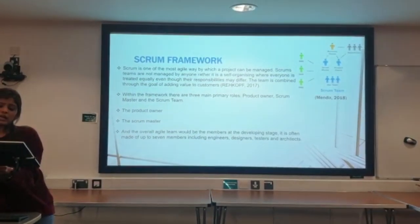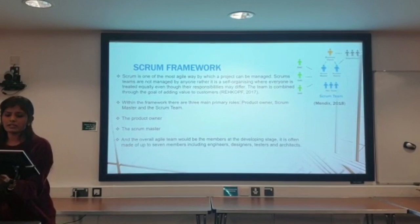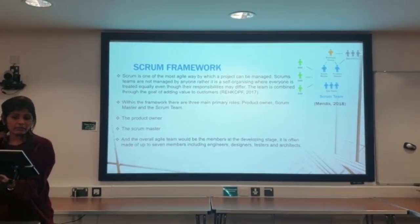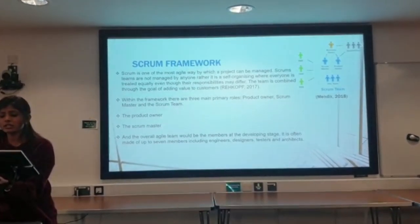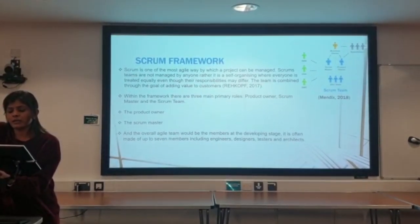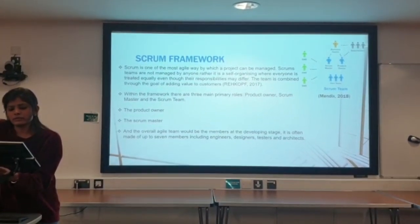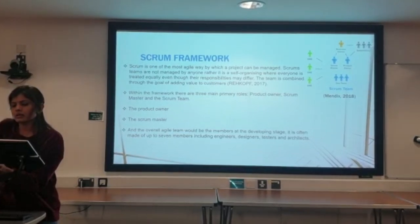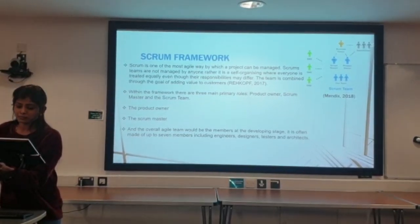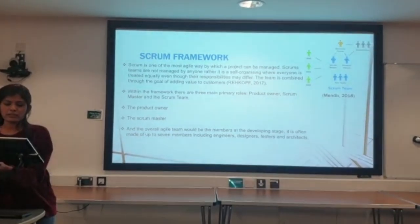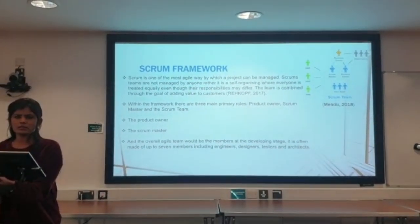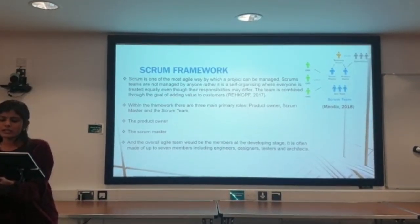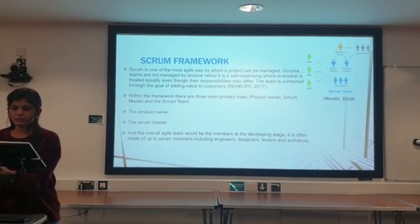Scrum framework is one of the most agile ways by which a project can be managed. Scrum teams are self-organising, where everyone is treated equally even though responsibilities are defined. The Scrum team is divided into three primary roles: Product Owner, Scrum Master, and the Scrum team. We experienced working in an agile team with the Scrum framework at Week 6, where we went through the game scenario. We didn't have a product owner but we did have a Scrum master who gave us guidance, and we all worked as an agile team together to design and carry out the process.